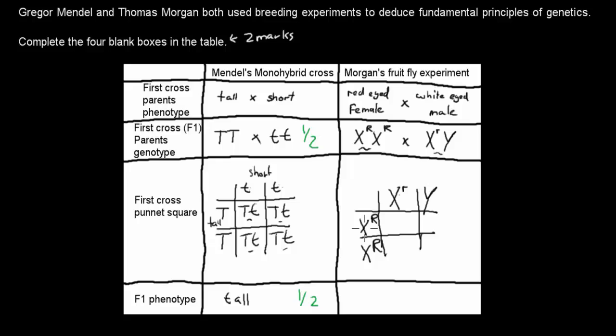This one would pair with this one, you have XᴿXʳ, so capital R and small r. This one with this one, we've got XᴿY, so capital R and a Y. Next two would have been the same thing: capital R and small r, and then this one and this one is capital R and a Y.